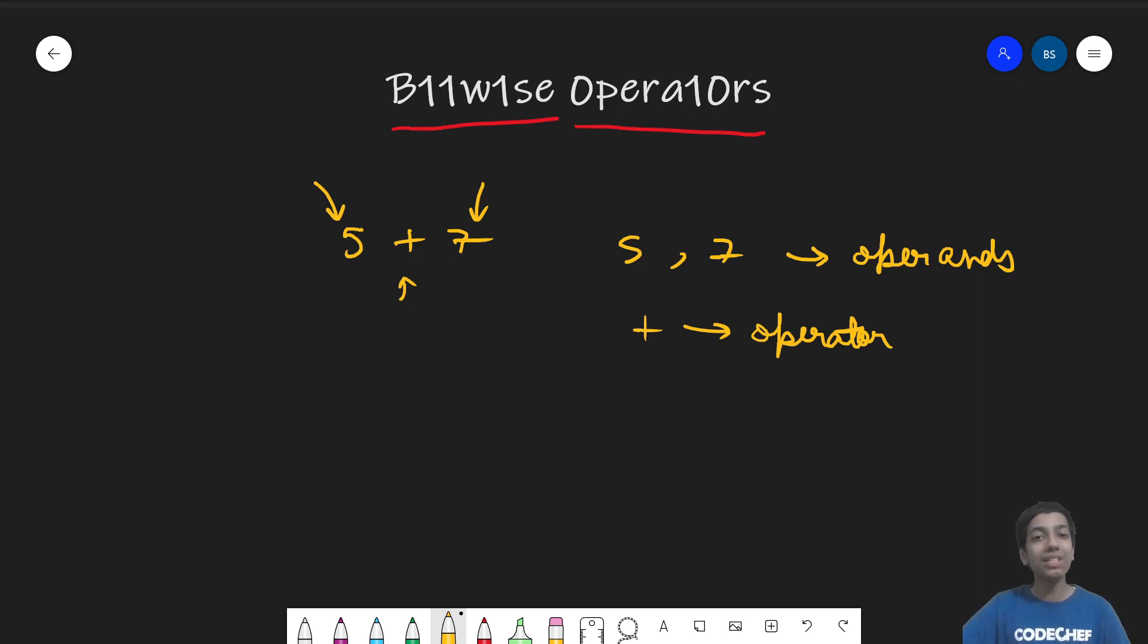But there also exist similarly bitwise operators. So if I write 5 and any bitwise operator, let's say and 1 or and 7. So here again these two are the operands and the and symbol is the operator. But the and is a bitwise operator.